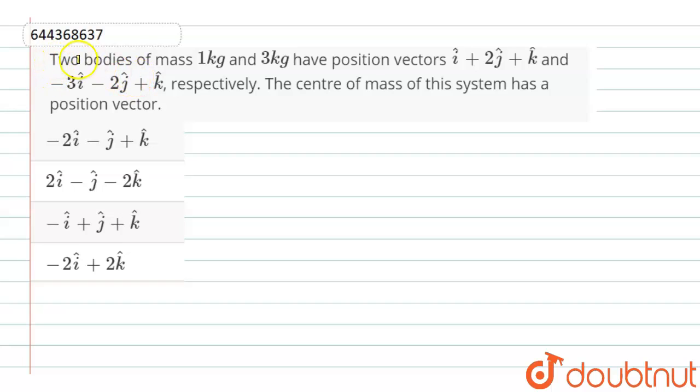Hello dear students, here the question is: two bodies of masses 1 kg and 3 kg have position vectors i cap plus 2 j cap plus k cap and minus 3 i cap minus 2 j cap plus k cap respectively. The center of mass of the system has a position vector.